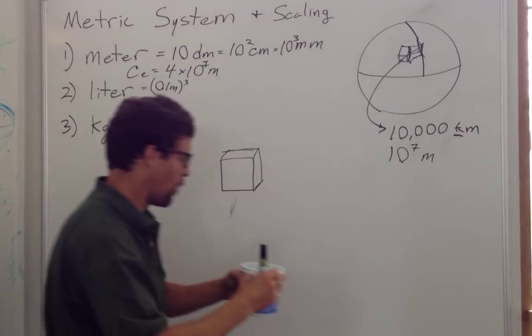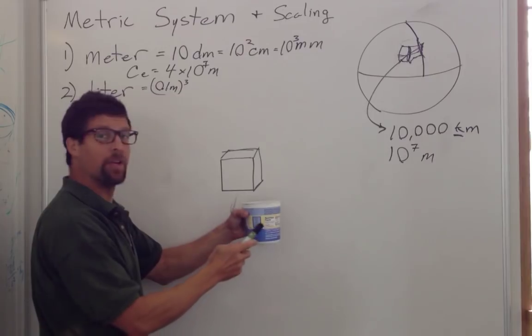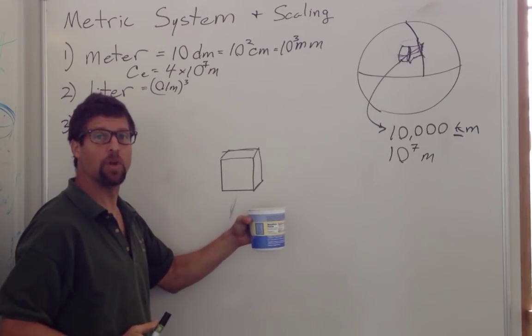And so we look, this is my one liter of yogurt. One liter of yogurt is one decimeter cubed of yogurt.